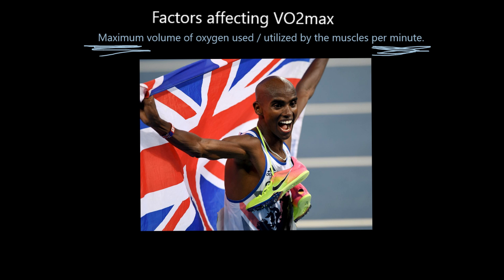It's best to talk about VO2max in terms of millilitres per kilogram per minute. In the past we looked at VO2max in terms of litres per minute, but a taller, bigger person will have a higher VO2max than a smaller person just because of the size of their lungs, not necessarily because they're fitter aerobically. So we divide VO2max in litres per minute by body weight in kilograms to get millilitres per kilogram per minute, levelling it out across all different body shapes and sizes.